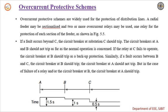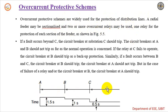These overcurrent protective schemes are mainly and widely used for the protection of distribution lines. To understand this, let us consider a Radial Feeder which may be sectionalized, and two or more overcurrent relays may be used. This Radial Feeder is sectionalized into three parts, with one relay for the protection of each section of the feeder.